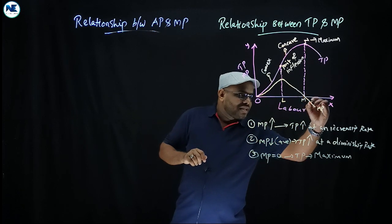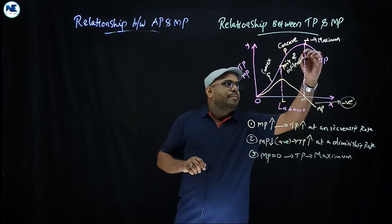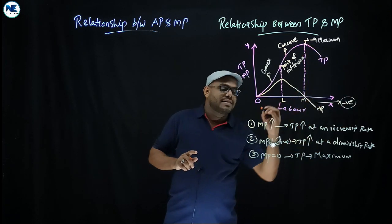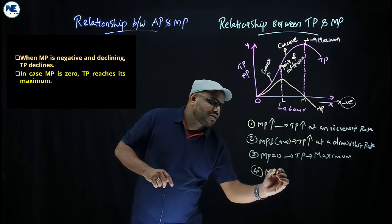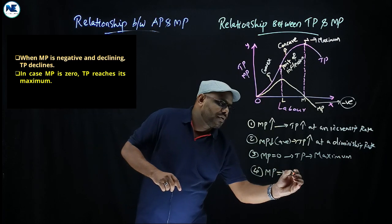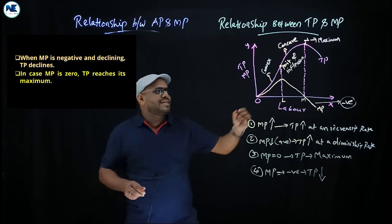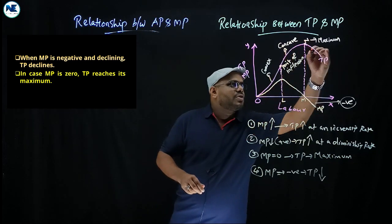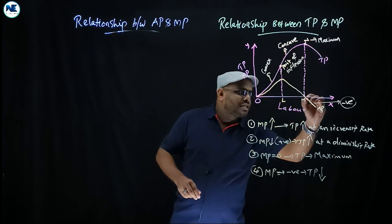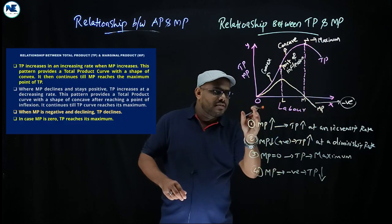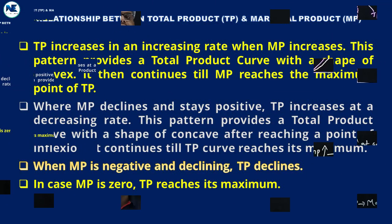After that, marginal product becomes negative — it goes from zero to minus one, minus two. When marginal product becomes negative, then total product declines. This is a very important point: marginal product being negative means total product is declining.